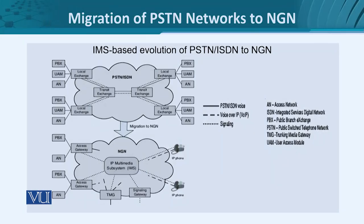We can finally conclude by looking at the migration process. The call server-based migration is not shown due to its complexity, but the eventual goal is to move existing legacy systems to NGN using the IP Multimedia Subsystem. The upper part involves the PSTN and ISDN temporary arrangement with legacy local exchanges and transit exchanges. Once migration is done, IMS replaces the core switching elements, and access gateways, trunking media gateways, and signaling gateways all communicate via the IMS.